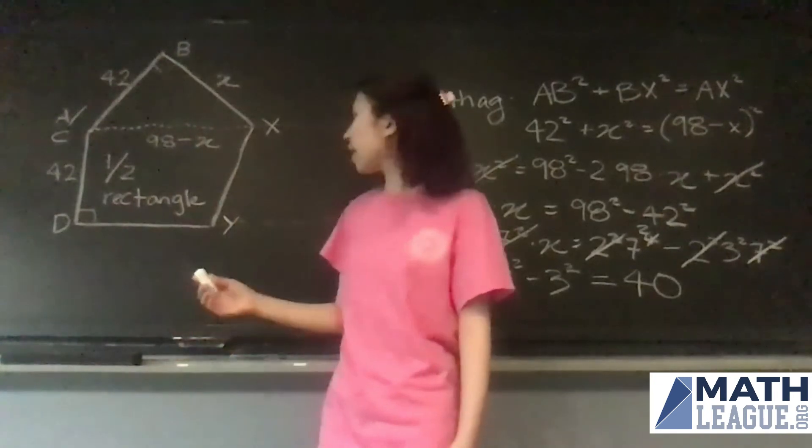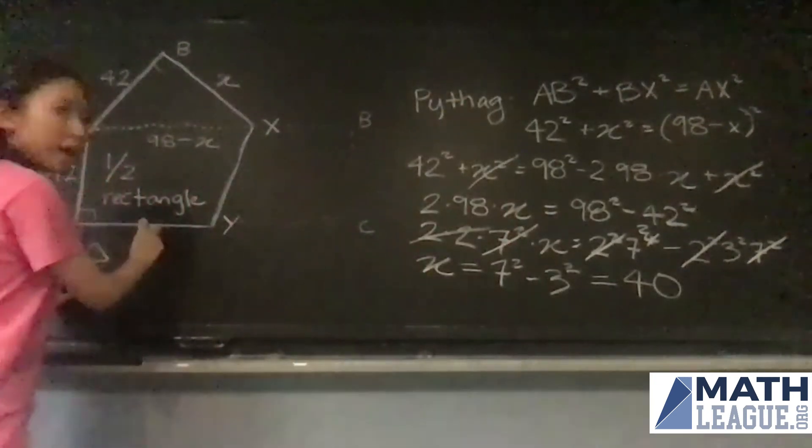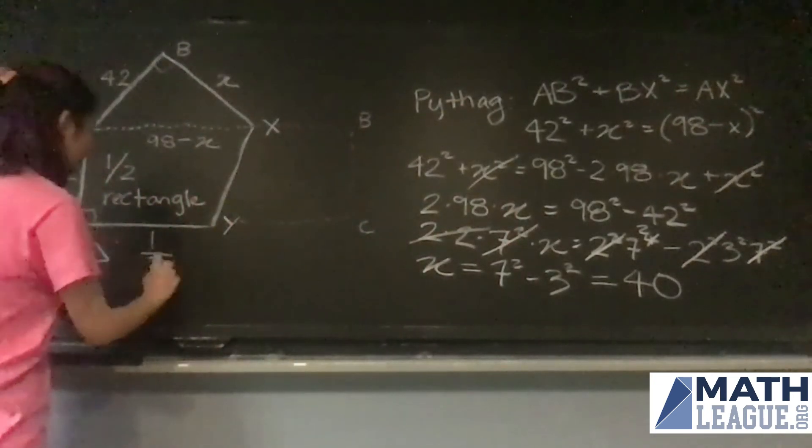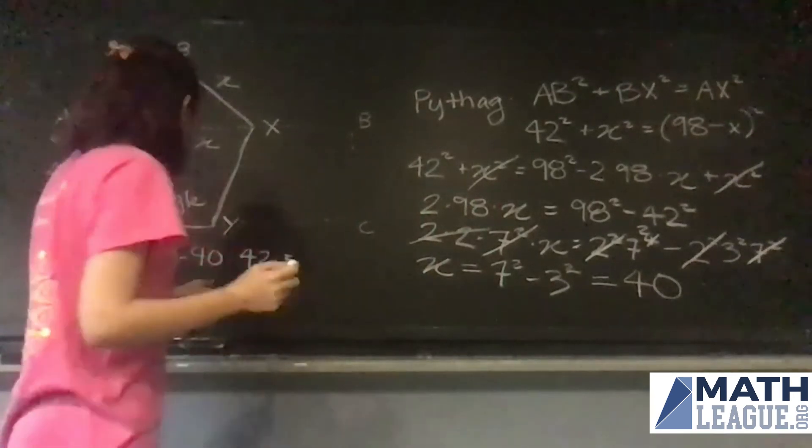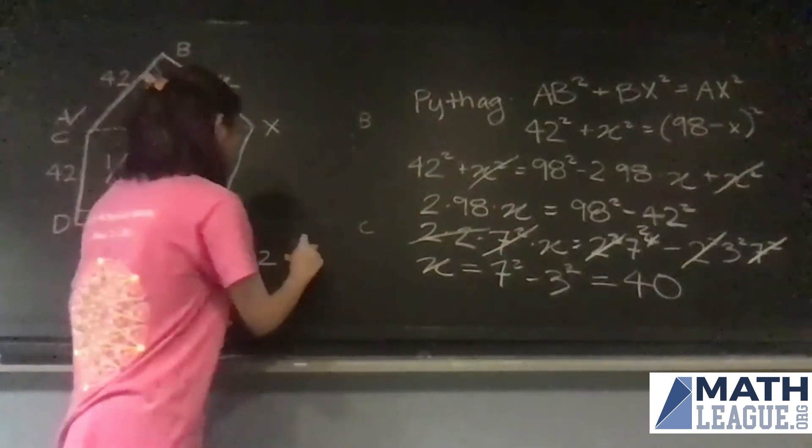Since we have our two lengths, 42 and 40, that's going to be one half base times height. So that's one half times 40 times 42, and that's just 40 times 21, which is equal to 840.